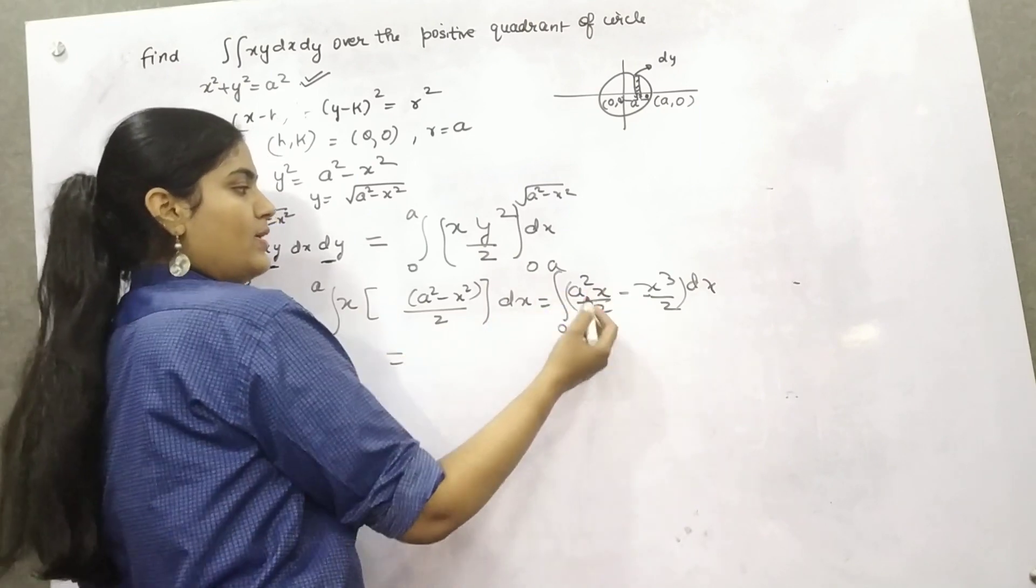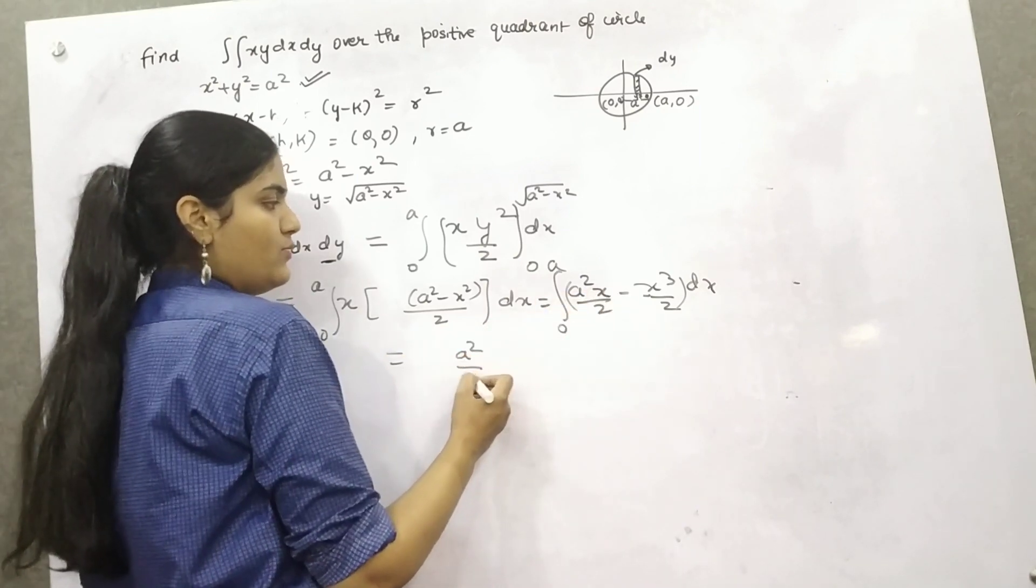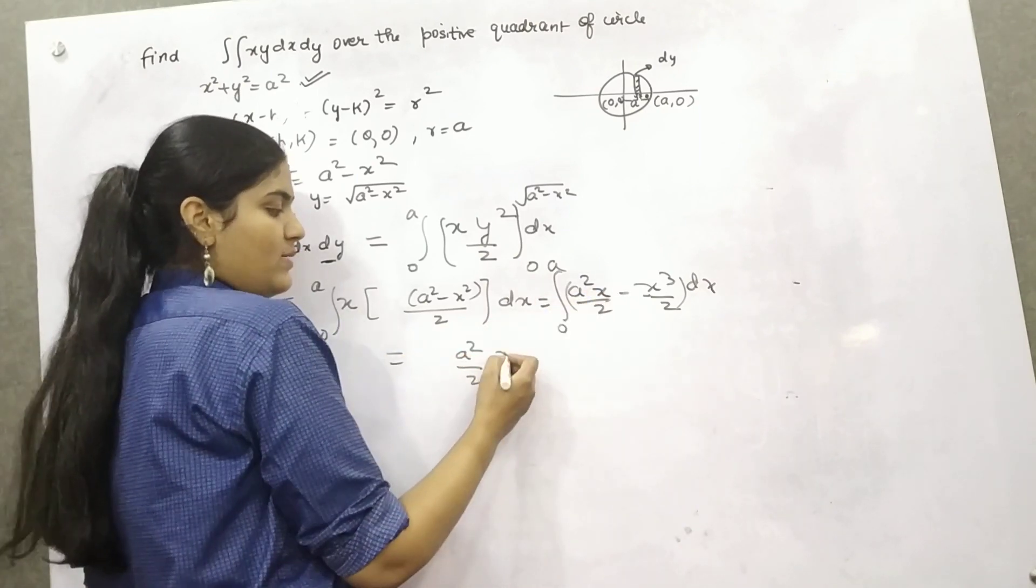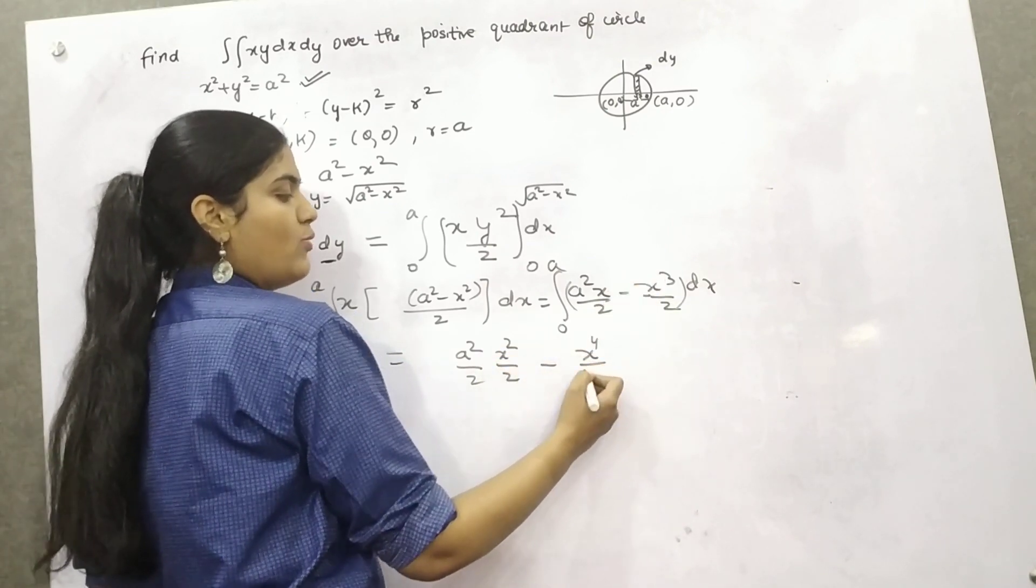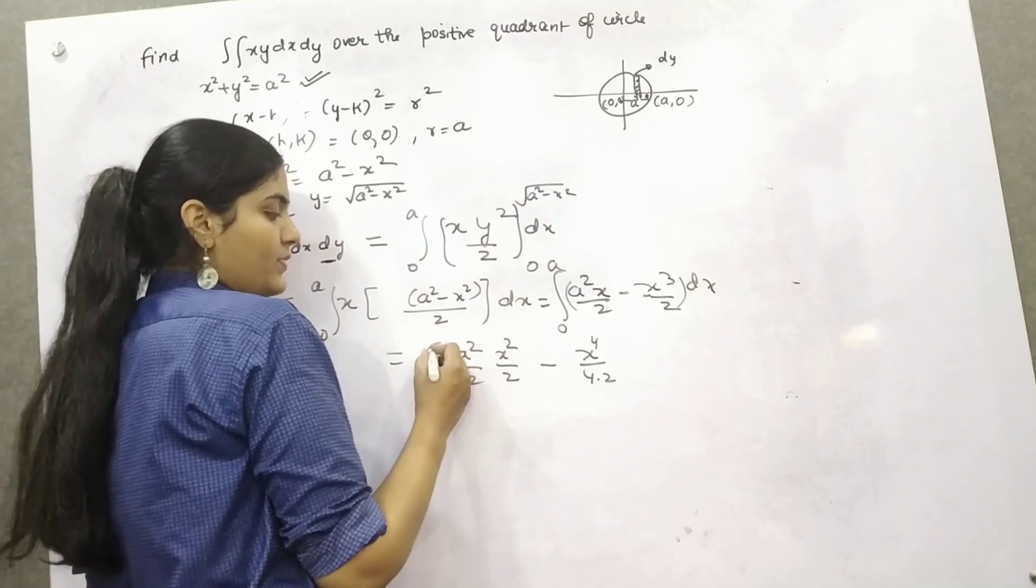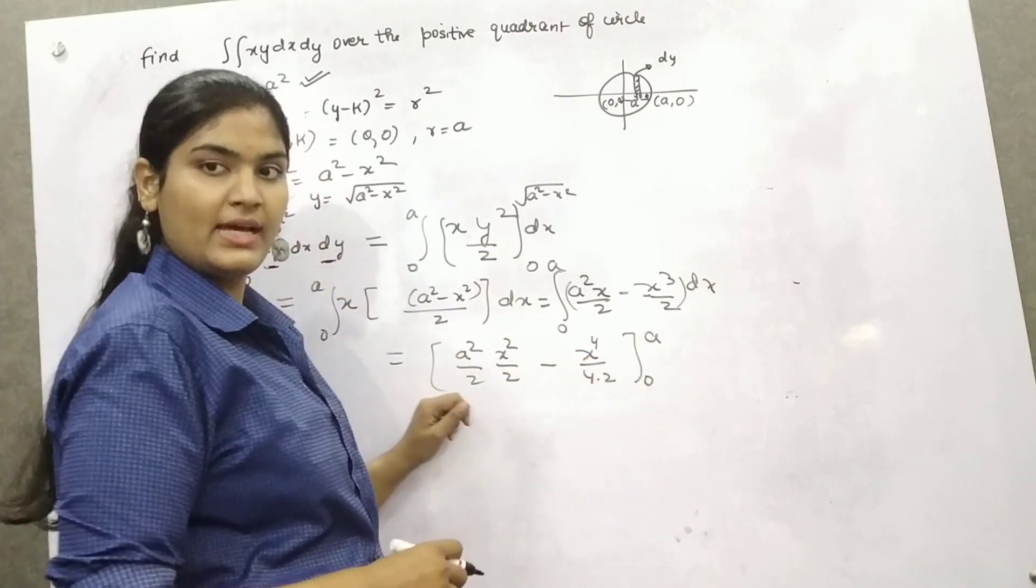Now, if you integrate this, a square by 2, integration of x will be x square by 2 and this will be x to the power 4 by 4. Limit 0 to a.